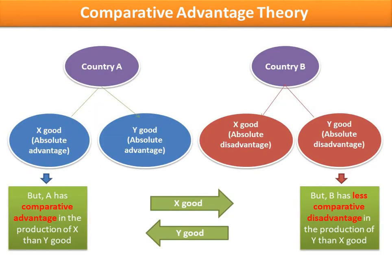This chart will give you a clear picture of how the comparative advantage theory works. Here country A has absolute advantage over country B in the production of both goods x and y, and country B has absolute disadvantage compared to country A in the production of both goods x and y. But the key point to note is that A has comparative advantage in the production of x as compared to y, and at the same time B has less comparative disadvantage in the production of y than in x.